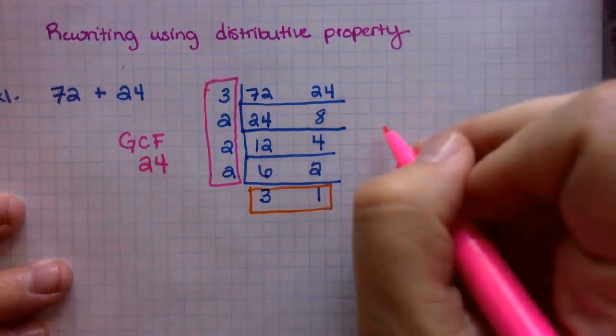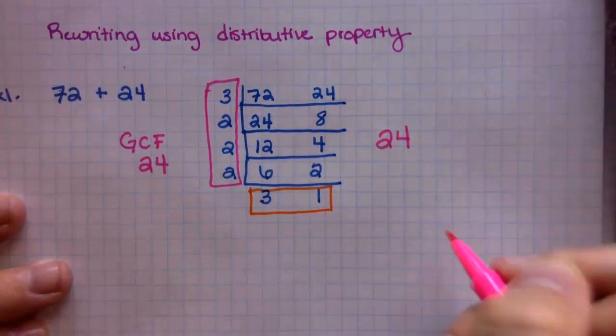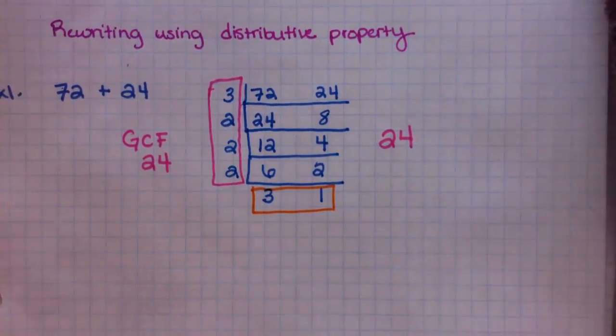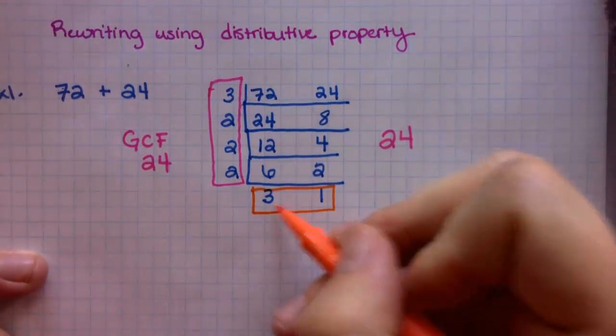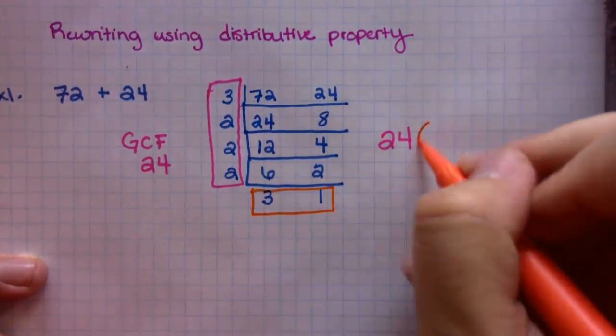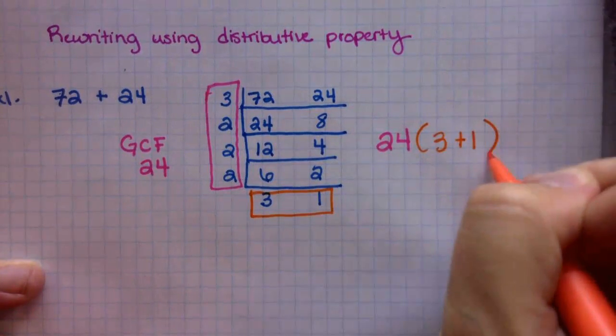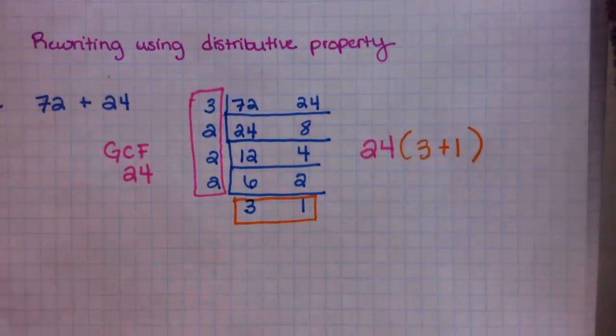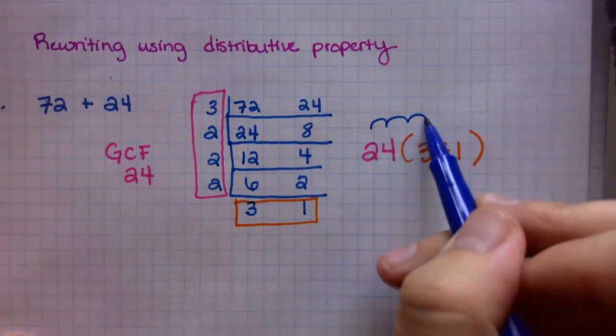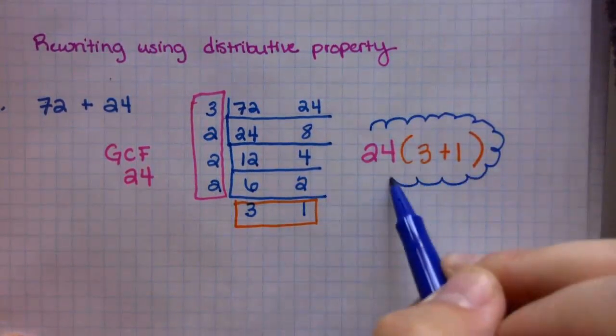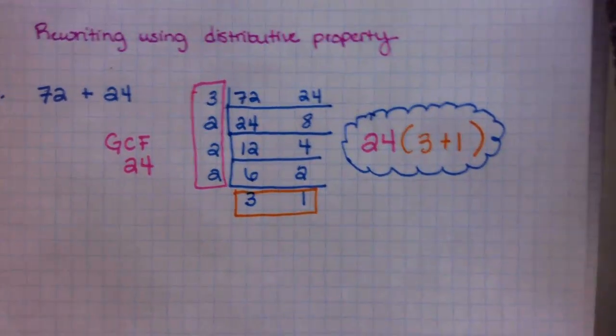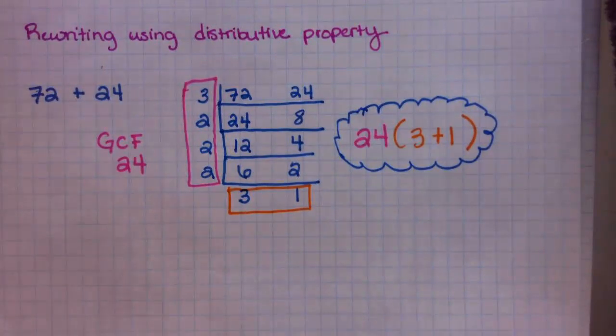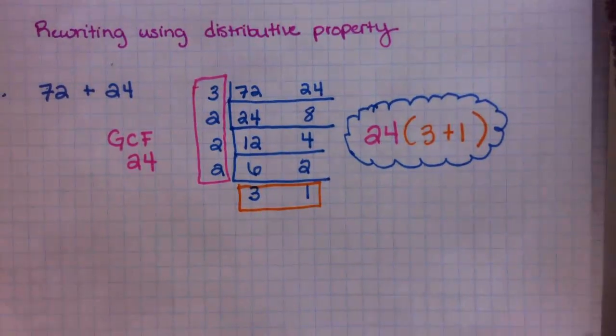Let me multiply that in my calculator: 3 times 2 times 2 times 2. So the GCF is 24. And then we have these numbers down here at the bottom, these are just kind of left over. So this is how you write using the distributive property. You take your GCF, which is 24, and then in these parentheses, you add these two numbers together. So you write it as 24 times (3 plus 1). So that is your final answer.